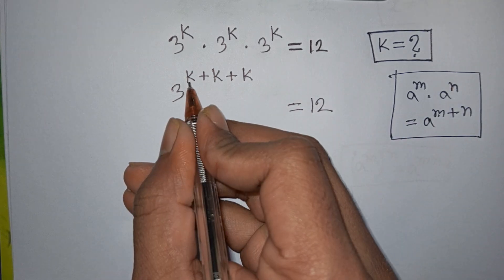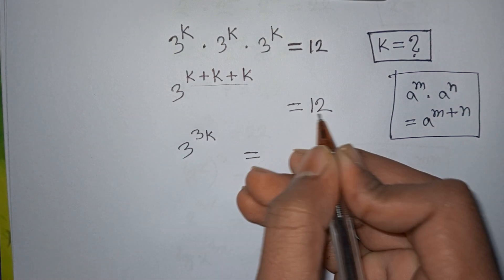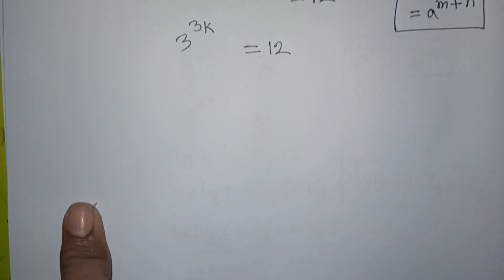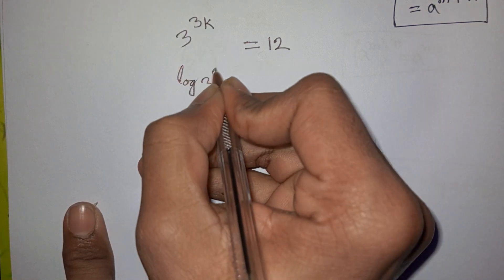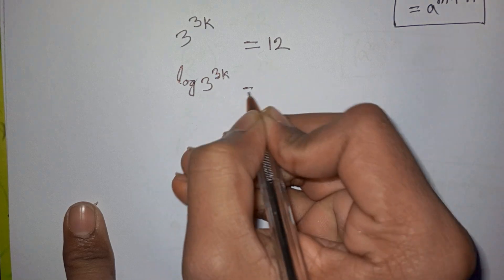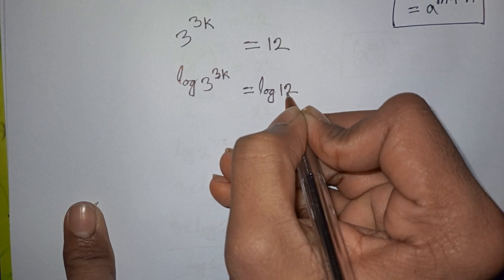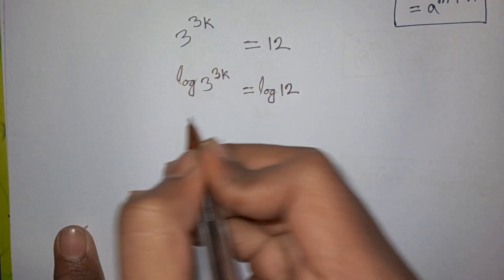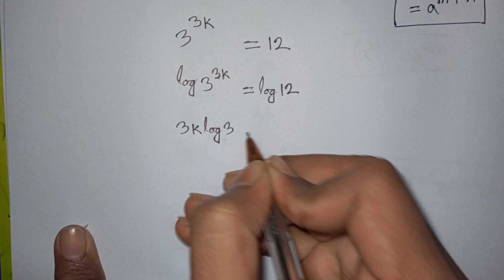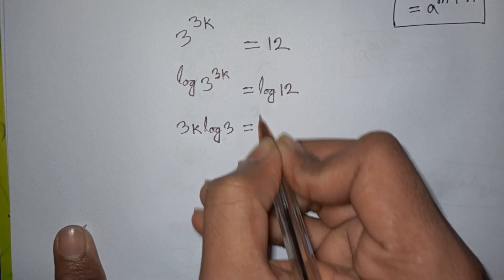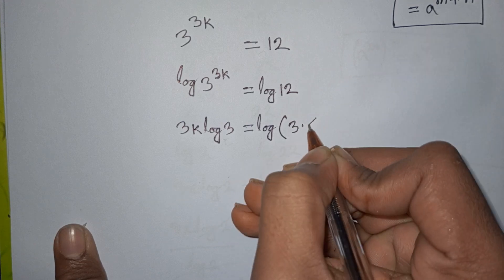So 3^(3k) is equal to 12. Now we take log on both sides: log of 3^(3k) is equal to log of 12. The power 3k moves down, giving us 3k·log(3) equals log(12), and log(12) can be written as log(3 × 4).